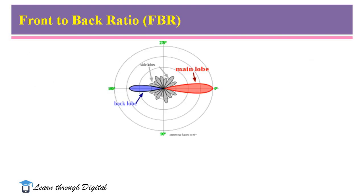Here I am going to explain the front to back ratio with the help of one illustration. I am considering the radiation pattern of an antenna. Already we know that radiation pattern consists of main lobe and minor lobes. Minor lobes are nothing but side lobes and back lobes.